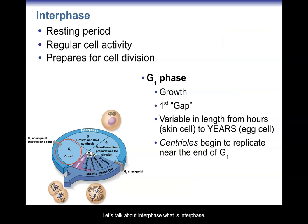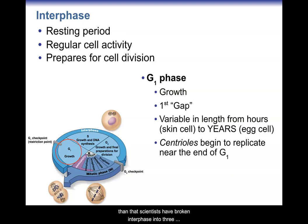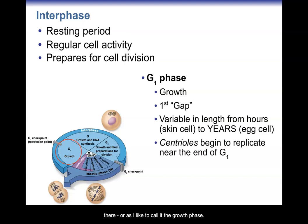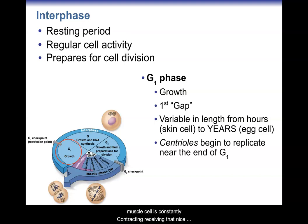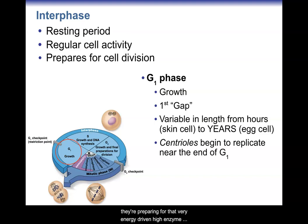Let's talk about interphase. What is interphase? The cell is just being a cell, though it's a little more complicated than that. Scientists have broken interphase into three different sections. First up is called the G1 phase, known as the first gap — hence the G — or as I like to call it, the growth phase. The cell is resting and doing its regular cell activity. If it's a muscle cell, it's constantly contracting and receiving calcium for signaling. During G1, the cell is also preparing for the very energy-driven, high-enzyme event of mitosis.